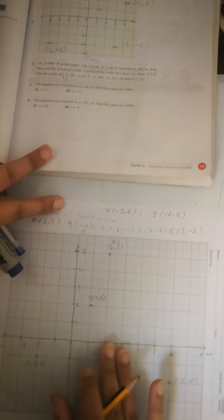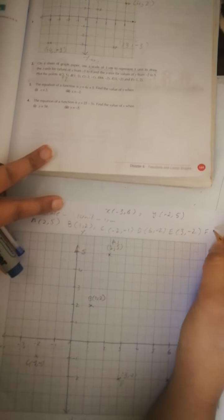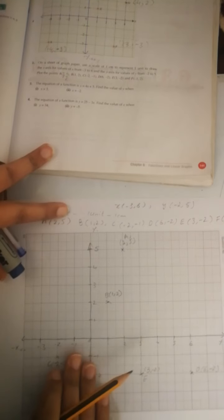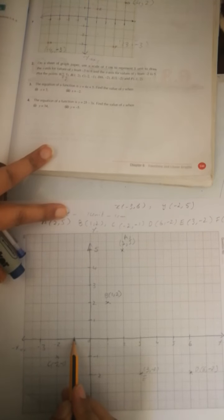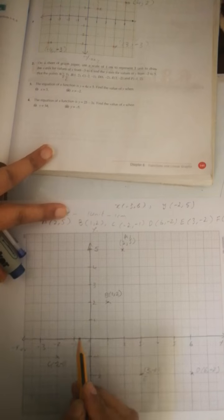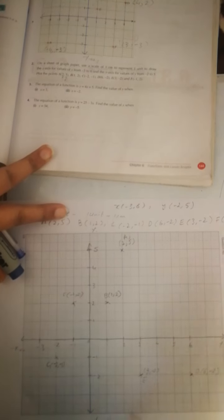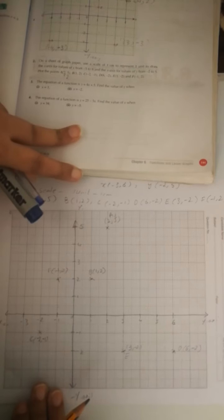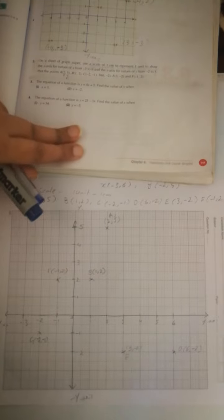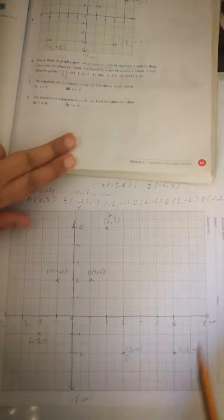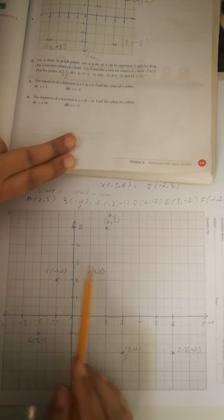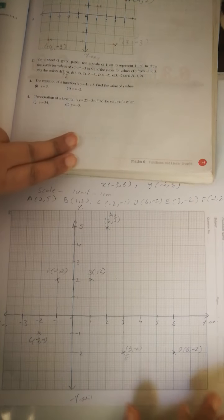The last point is F at (-1, 2): x is minus 1 here, and y is 2, so make it up — F is at (-1, 2). Question number 2 only asked us to plot the points, so we have plotted all the points and it is finished.